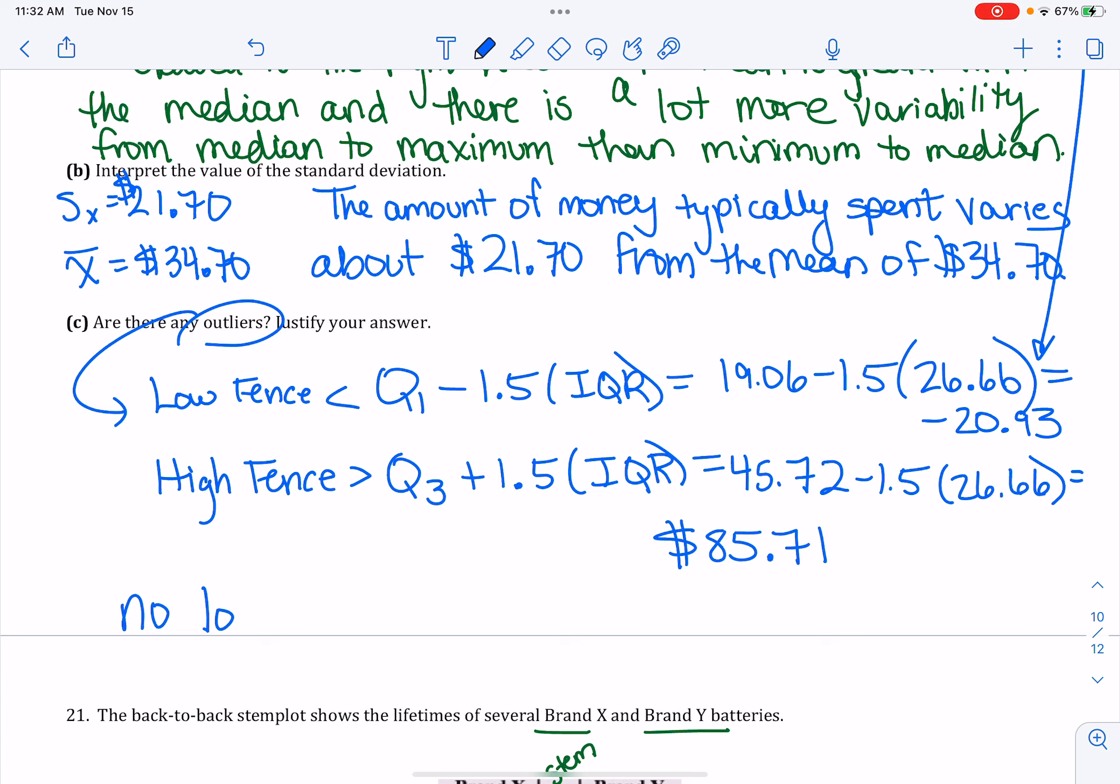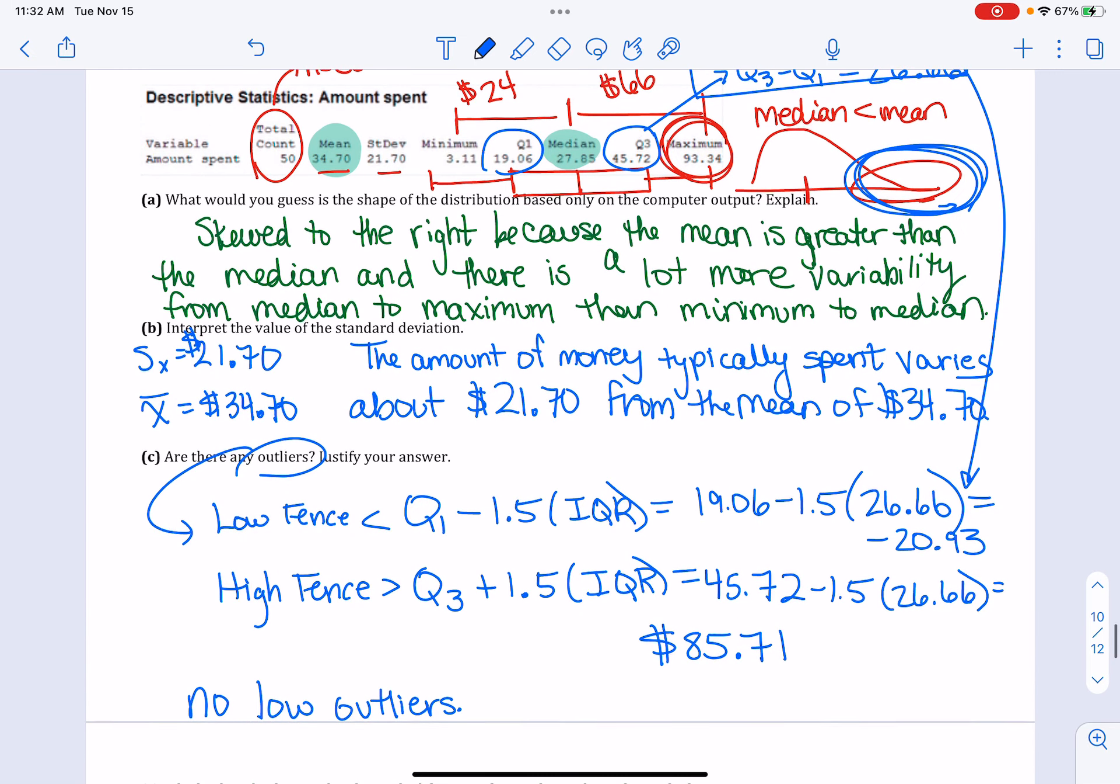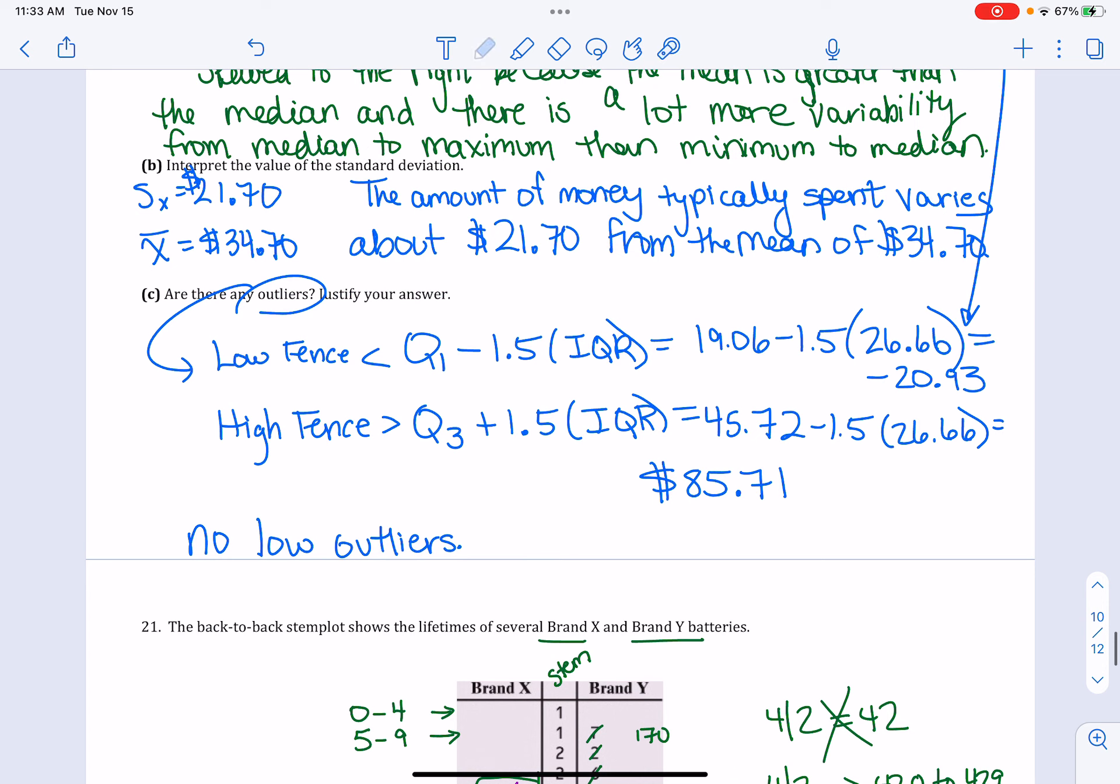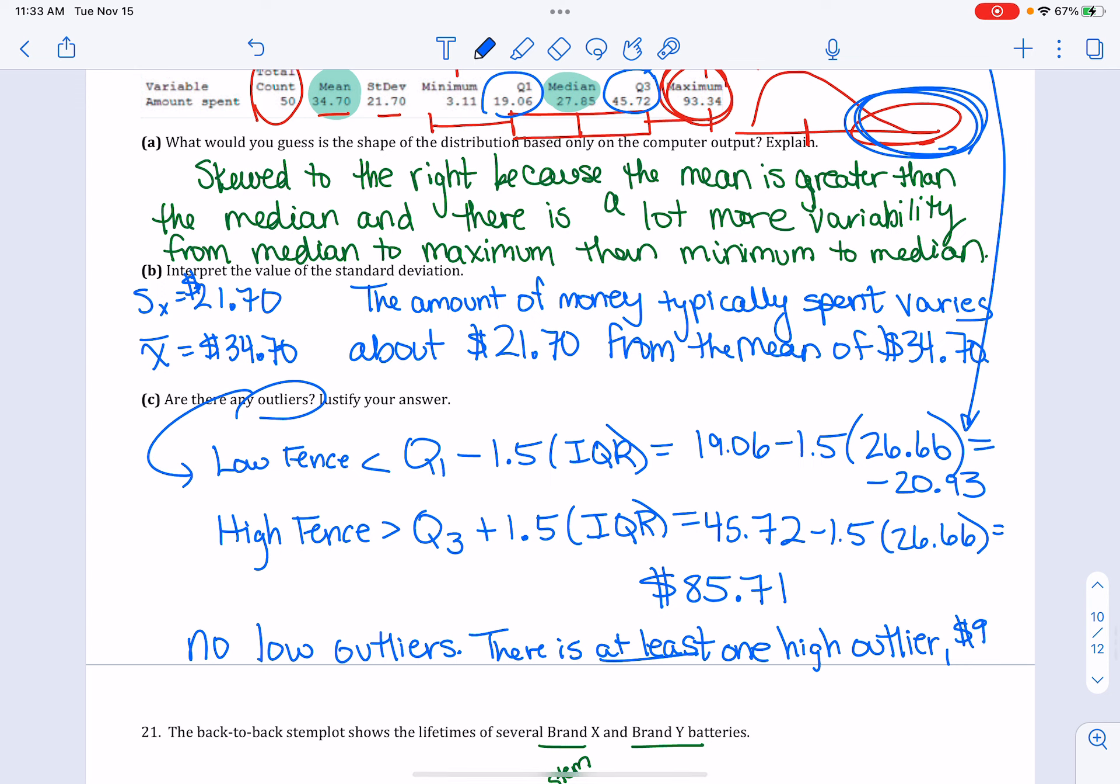So there are no low outliers. However, there is definitely at least one outlier that is a high outlier. And that would be the maximum, okay? We don't know any of the other values besides what we're given up there. So there could be a couple outliers. But all we can conclude is there is at least one high outlier, $93.34.